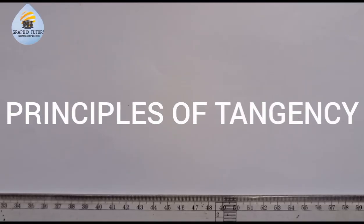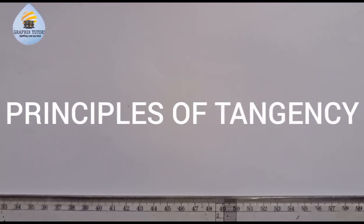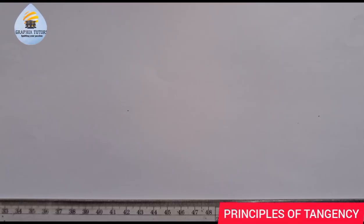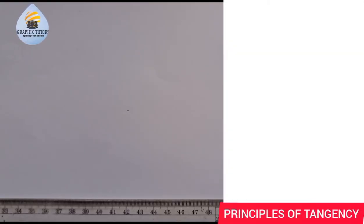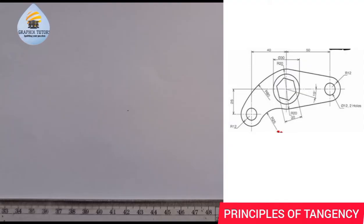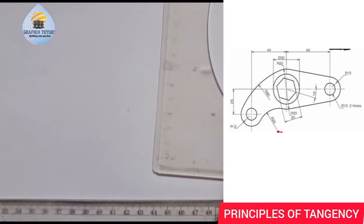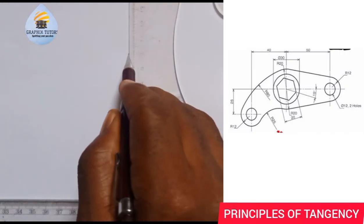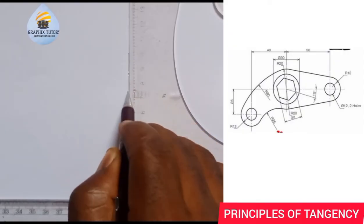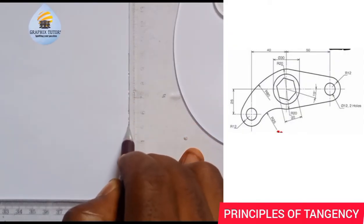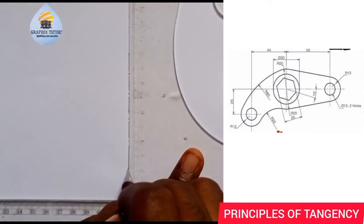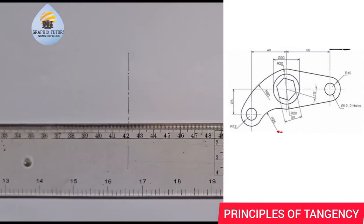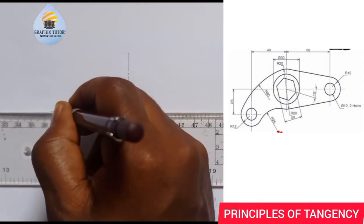Everyone, my name is Graphics. If you look at the right-hand side of the screen you see a figure there, and we are to reproduce that figure using the principle of tangency. The first thing we are going to do is draw your vertical and horizontal axis — I'll use my center line to represent it: a long one, short one, long, just like that. And the horizontal axis I'll use my long one.